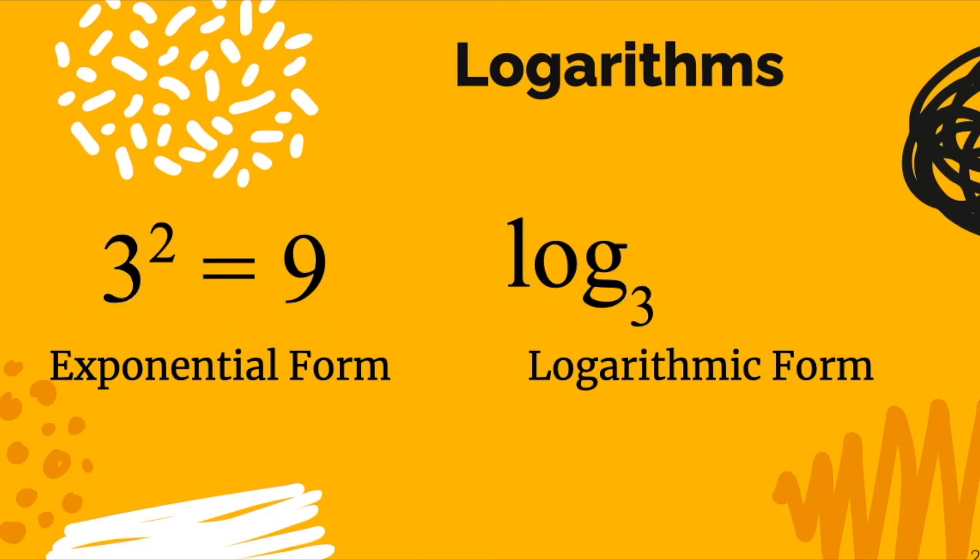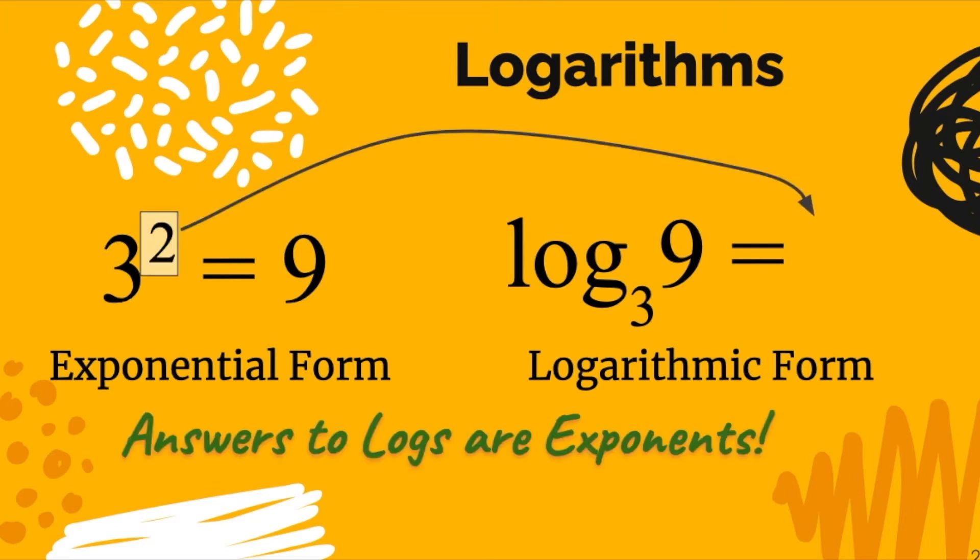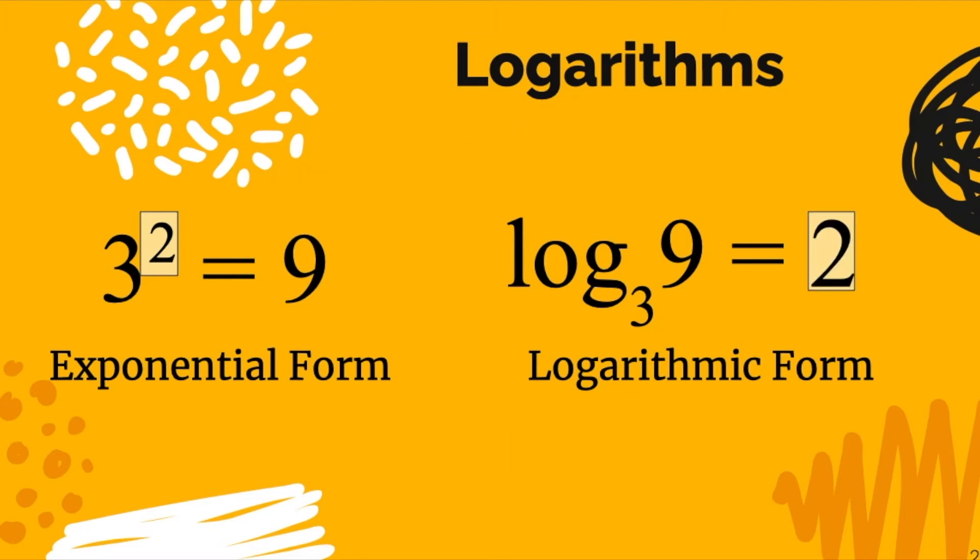The answer in the exponential form, the 9, becomes the inside of the logarithmic form. So now we have log base 3 of 9. Here's where it gets interesting. We take that number 2, and you need to remember that answers to logs are exponents. So therefore, the 2, which is an exponent, becomes the answer to our logarithm.